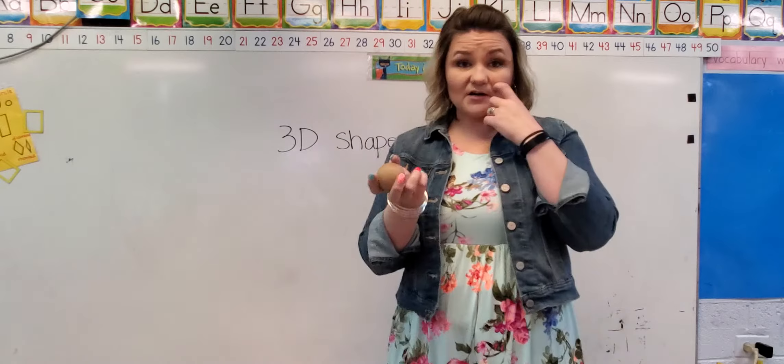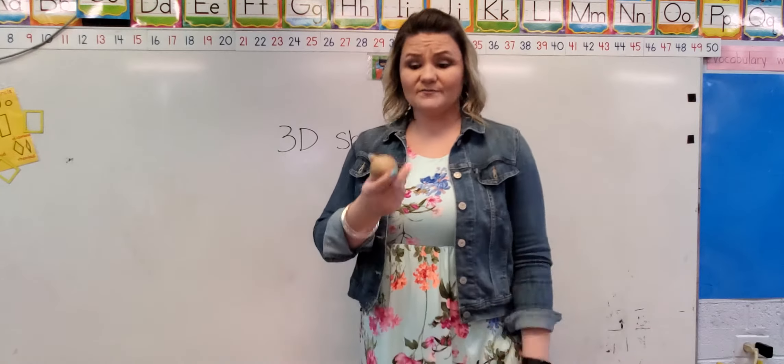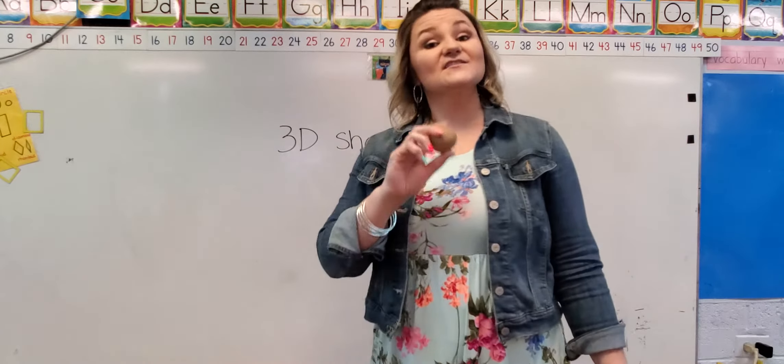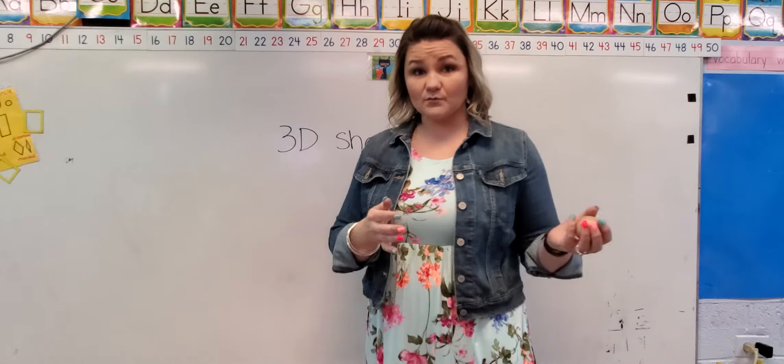Then we've got the sphere. We like to compare all 3D shapes to things that they know. This obviously looks like a ball. Half the time they call it a ball, but it's a sphere. It has no sides, no corners, and it obviously rolls.